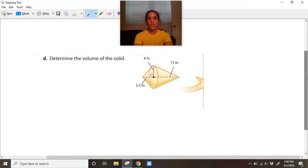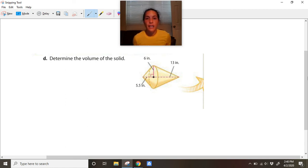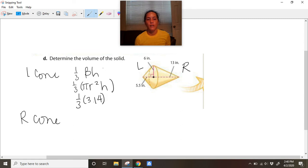Determine the volume of the solid. It looks like in this problem we have two cones - I'm just going to call it the left cone and the right cone. For the left cone: V = 1/3 πr²h. The radius for the little one is right here, so this is 6 squared, and the height of the little one is 5.5. I'm just going to get ready to do the right cone.